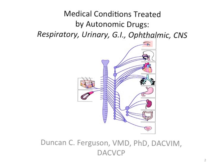Continuing our discussion of medical conditions treated by autonomic drugs, we're going to now talk about respiratory, urinary, GI, ophthalmic, and CNS applications of autonomic drugs.